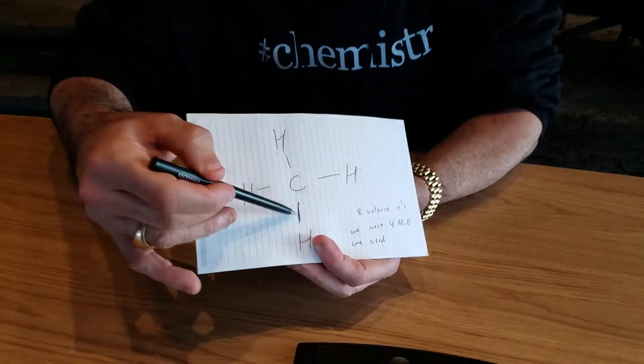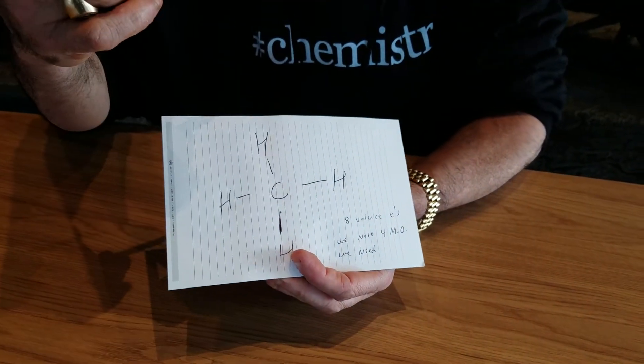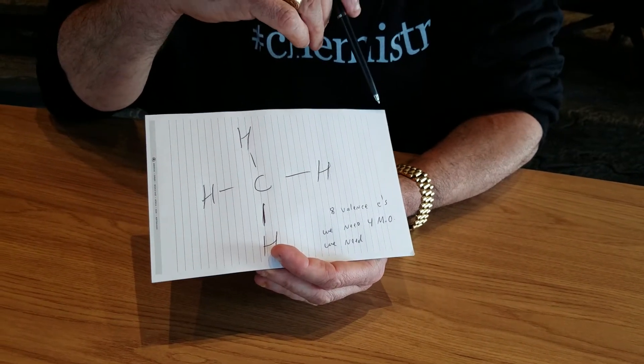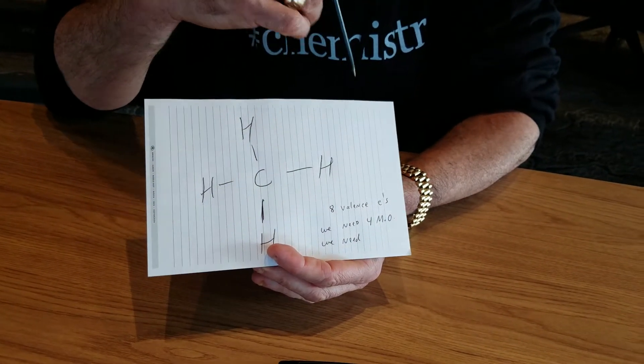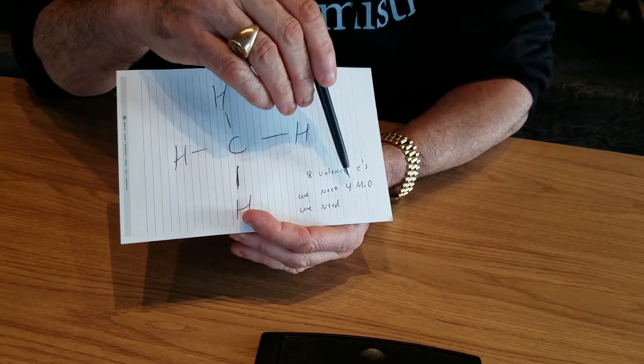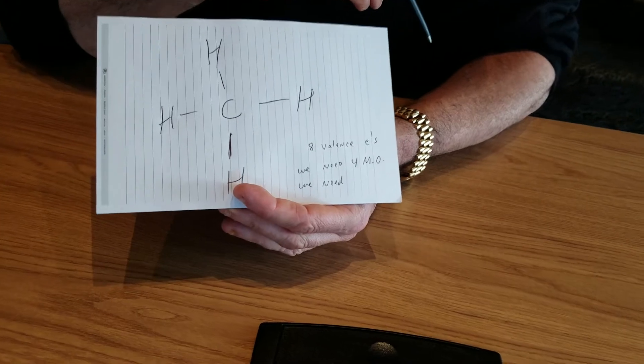The question was, if you had methane, how many total orbitals would you have? This is a hard question. This is methane, as you all know. CH4 is methane. So all you would do is count: 2, 4, 6, 8 — there are 8 valence electrons. If there are 8 valence electrons, and each orbital contains 2 electrons, that means we're going to have 4 needed molecular orbitals.